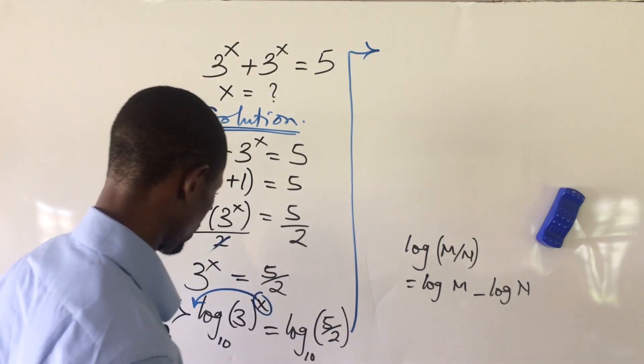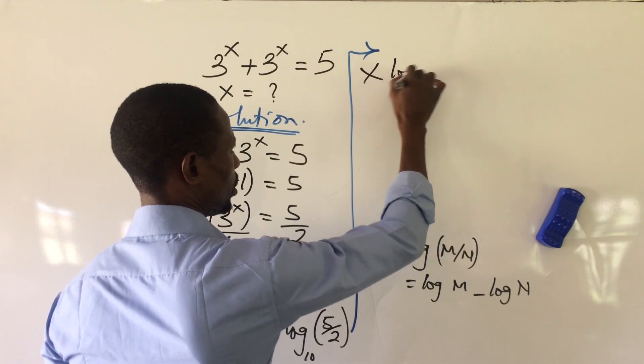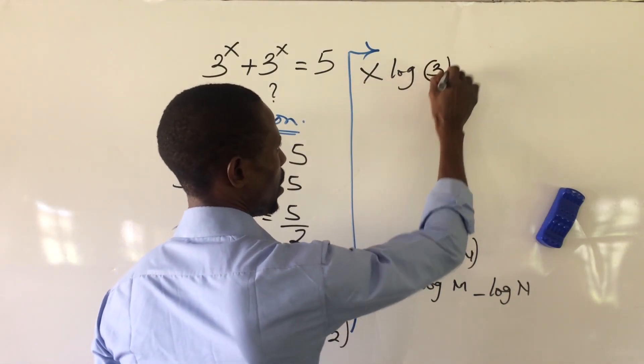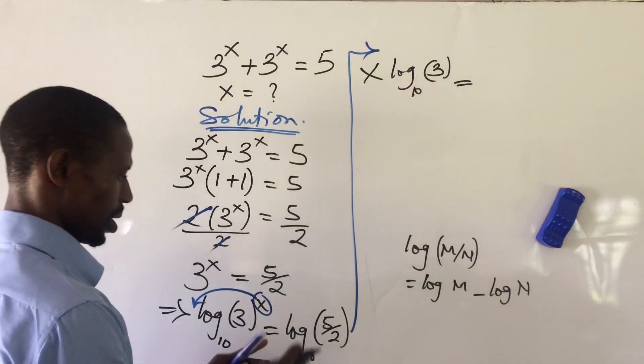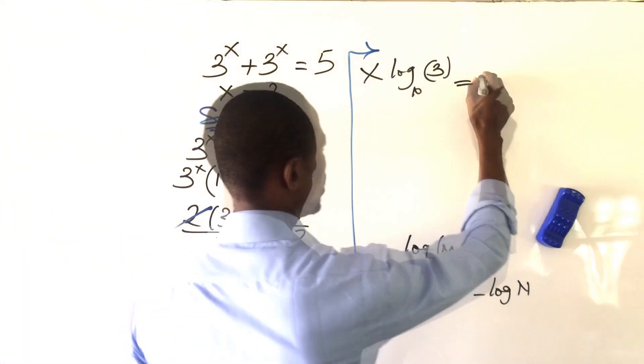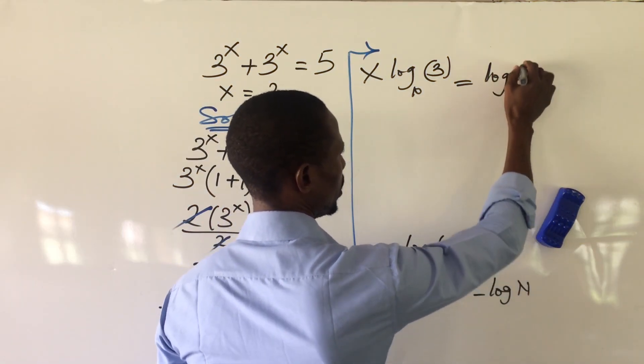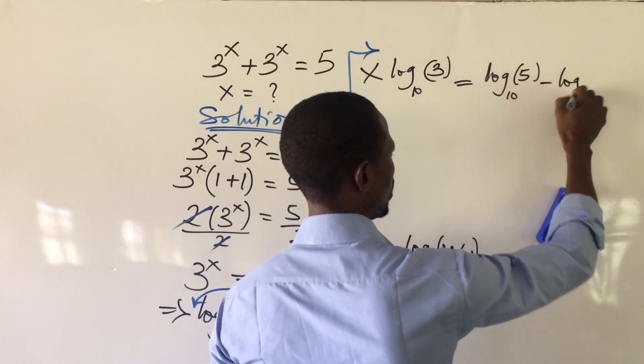So if we adhere to this rule and this power rule, the whole of this equation can now be written as x log 3 base 10 equal to, on this side we're going to have log 5 base 10 minus log 2.